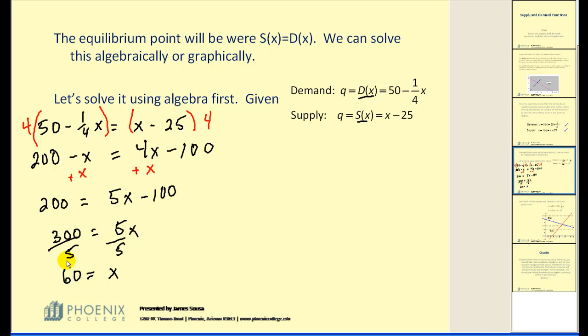60 is the price of the equilibrium point. That's how much the item should sell for. Now, remember the equilibrium point consists of the price and the quantity. In order to find the quantity, we have to set X equal to 60 in one of these functions. Let's go ahead and use the supply function.